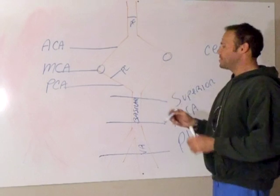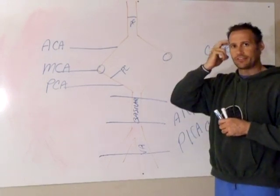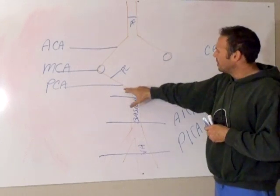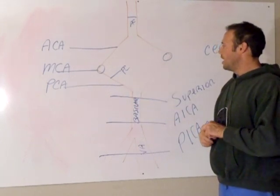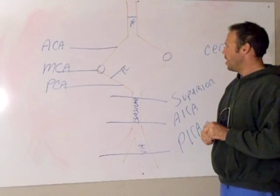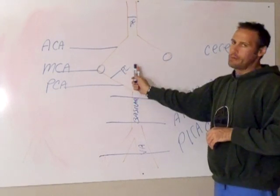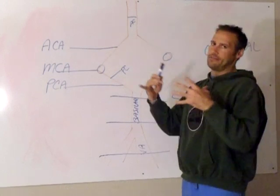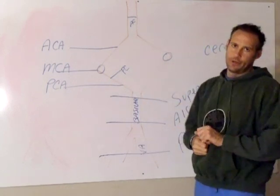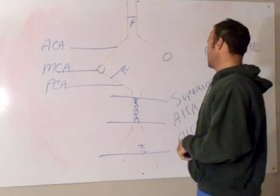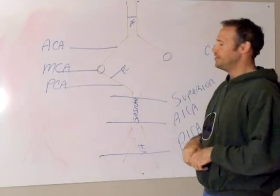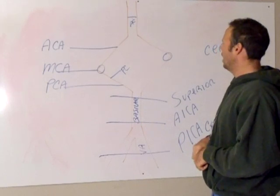That's important to remember where it is because often times that's a test question. It's not between the basilar and the posterior cerebral artery. Often times it's hard to remember where the posterior communicating is because in this area you have a lot of confusion when you look at the structures anatomically. But if you can remember this in your brain, which should be easy, you'll have an easier time figuring out what is what.